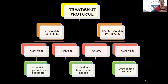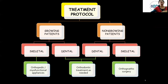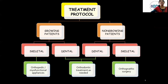Coming to the treatment protocol, we can divide the treatment of Class 3 malocclusion into two categories: a growing patient and a non-growing patient, as the treatment differs between the two. In a growing patient, we can divide treatment into skeletal and dental. Similarly, in non-growing patients, it can also be divided into dental and skeletal.